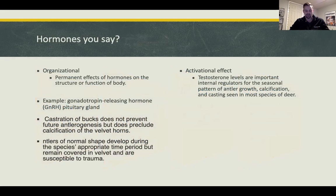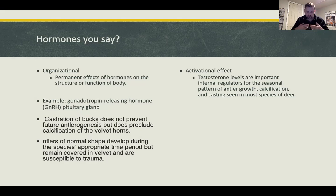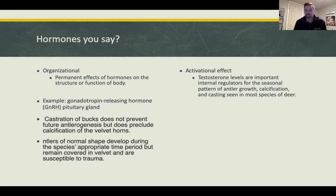For the organizational hormone example: white-tailed deer males have antlers, and their antler growth is not just triggered by hormones at a certain time. Testosterone goes to their body when they're born through the pituitary gland. Even castrated bucks have hormones and will start forming antlers — they'll have velvet on them in normal shape but remain covered in velvet. The organizational part is that they were born with testosterone, which created the capacity for antler growth in the first place.